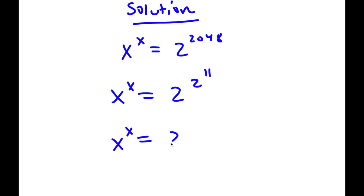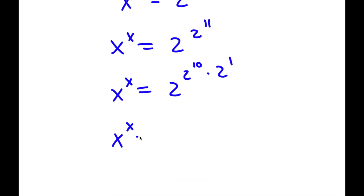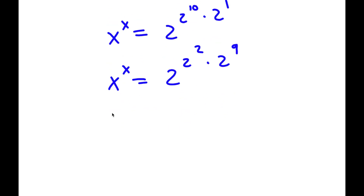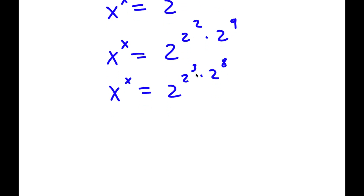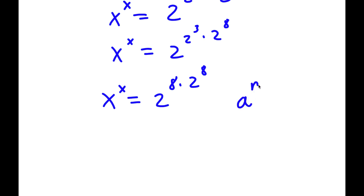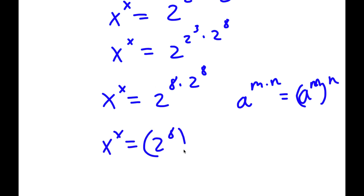Now, 2 to the power of 11 is the same as 2 to the power of 10 times 2 to the power of 1, which is also the same as 2 to the power of 2 times 2 to the power of 9, which equals 2 to the power of 2 to the power of 8. Since 2 to the power of 3 equals 8, I now have x to the power of x equals 2 to the power of 8 times 2 to the power of 8. Using the rule that a to the power of m times n equals a to the power of m to the power of n, this becomes 2 to the power of 8 to the power of 2 to the power of 8.